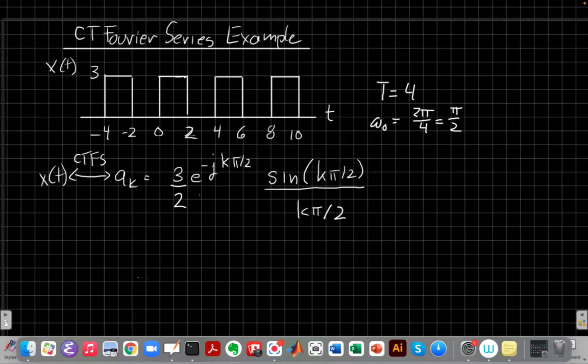Remember the original videos I did on Fourier series showing you how to find the a sub k's? I showed you an example where x(t) was a square wave that looked like this with a period of 4 and a height of 3. By going through the integral for a sub k, I found that a sub k had this form: 3 over 2 e to the minus j k pi over 2 sin(k pi over 2) times k pi over 2.